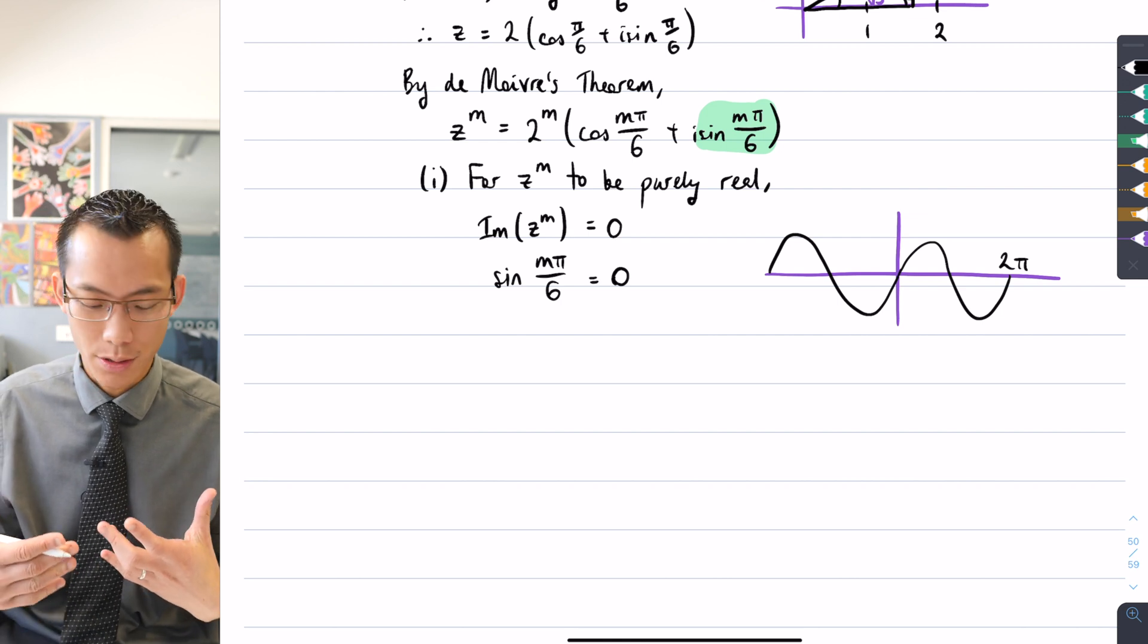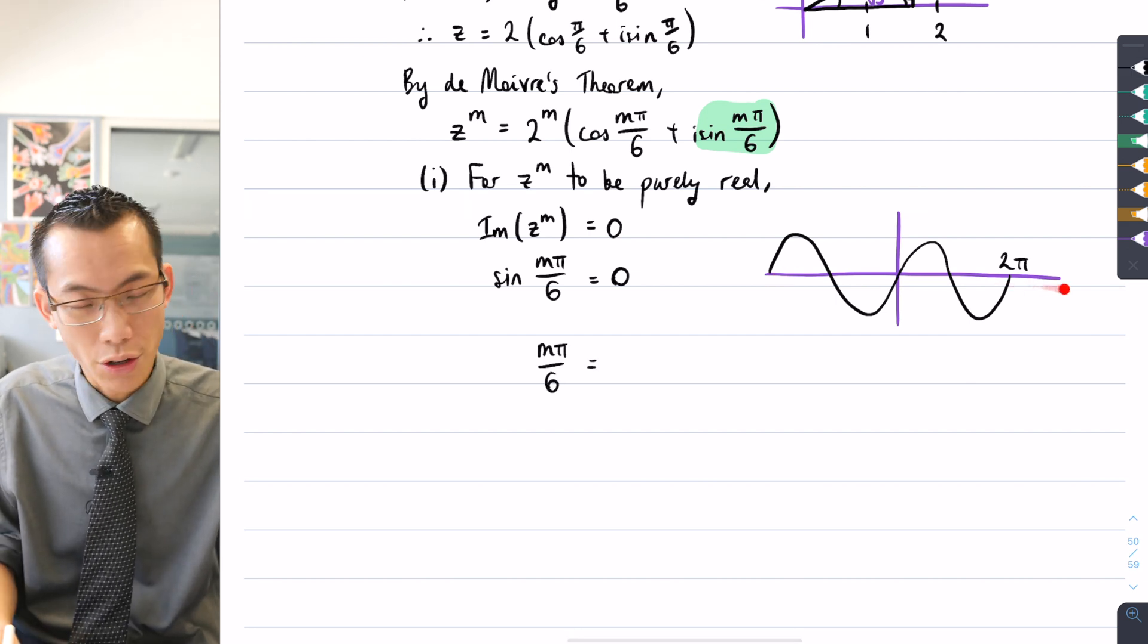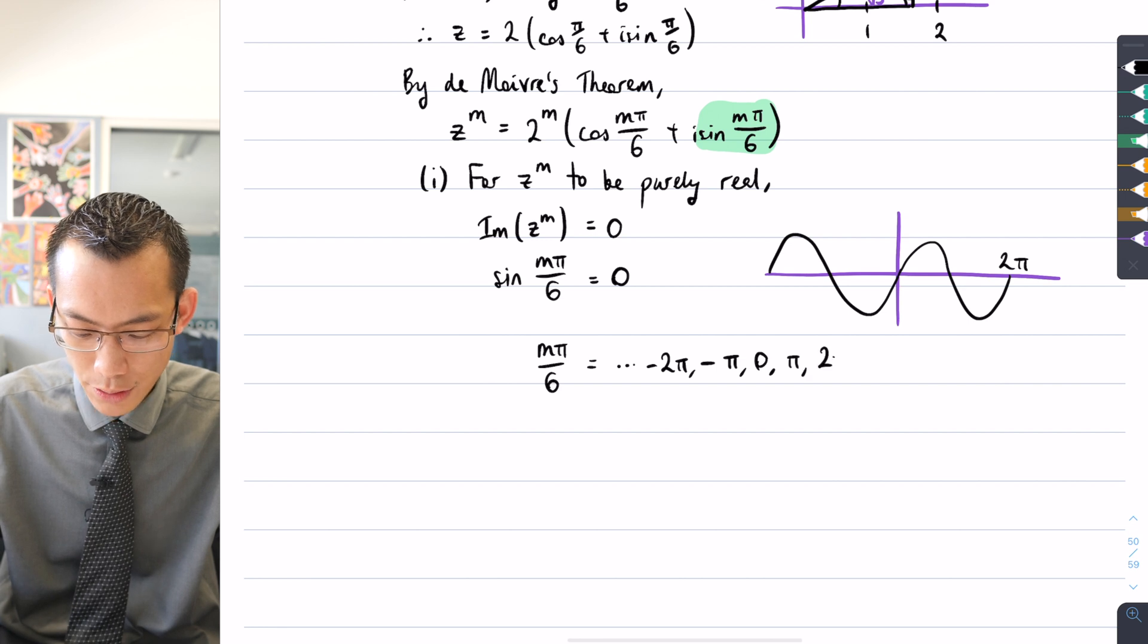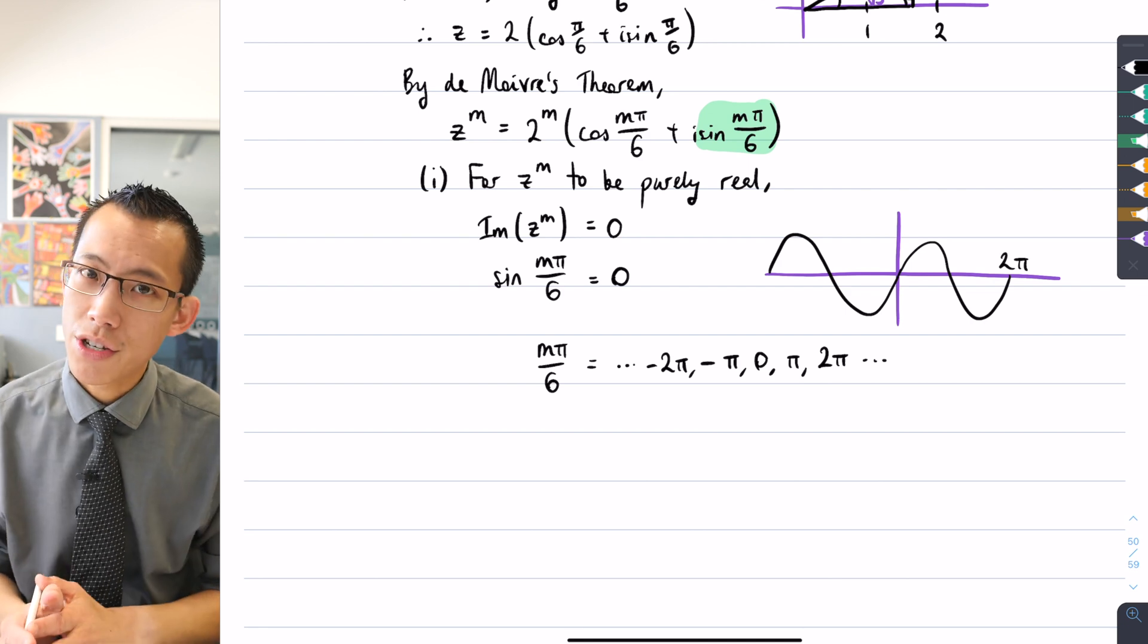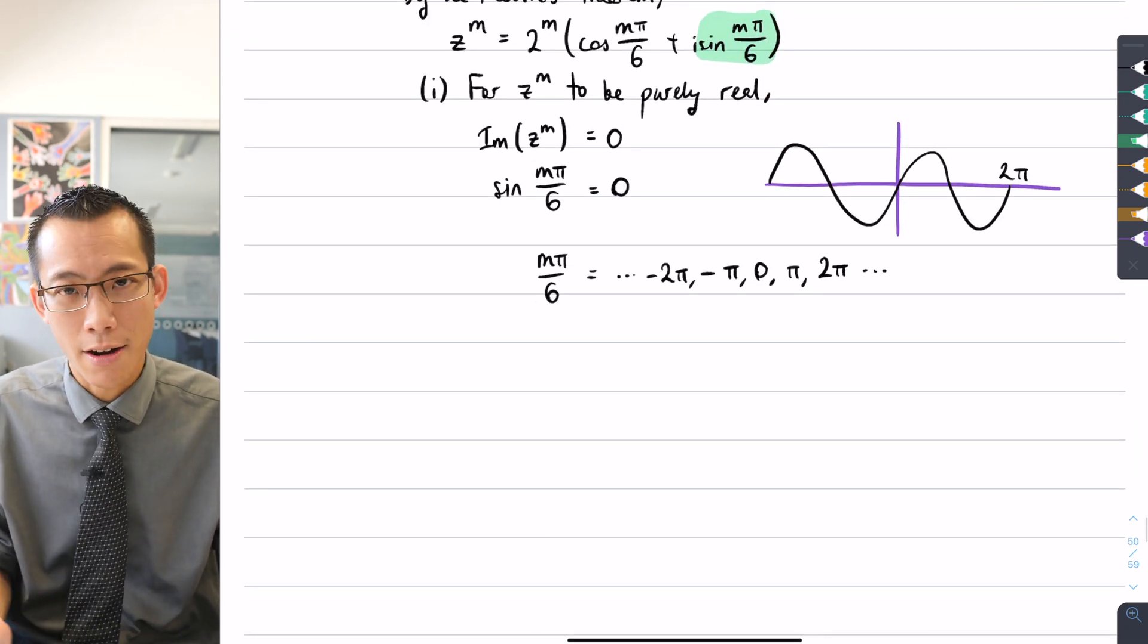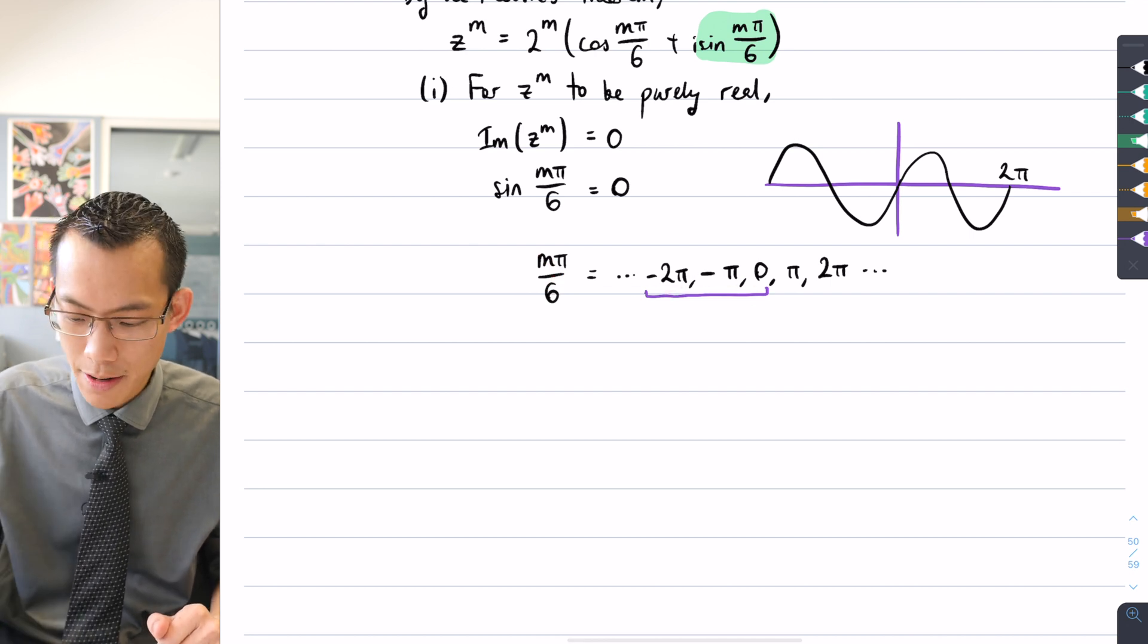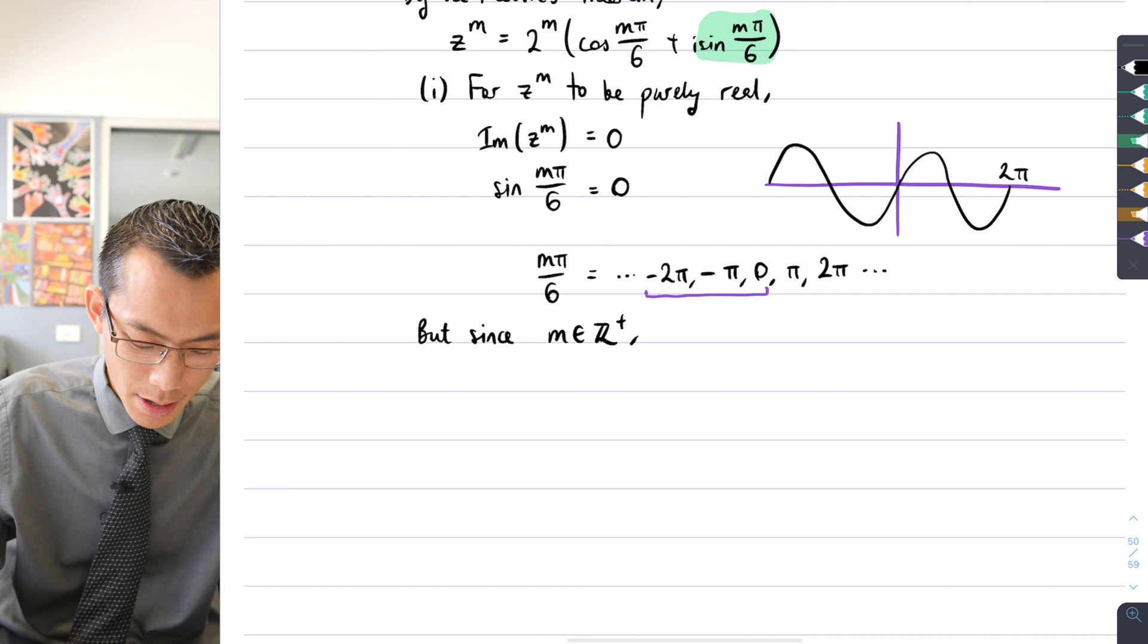So mπ/6 equals ..., -2π, -π, 0, π, 2π, and it keeps going. All of these give a value of zero when I take sine of them. But there are restrictions on m—we said m is a positive integer, so some of these values are irrelevant, namely the negative ones. You can't find a positive integer m that will give you these particular values.